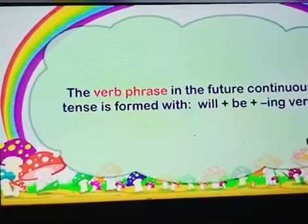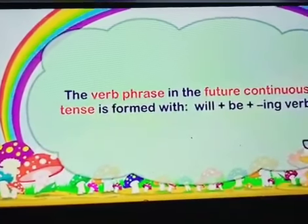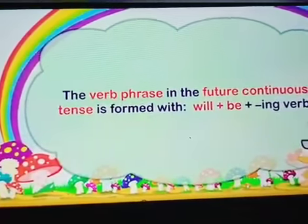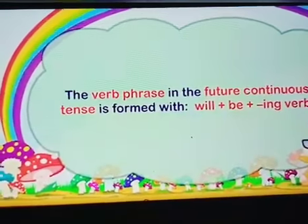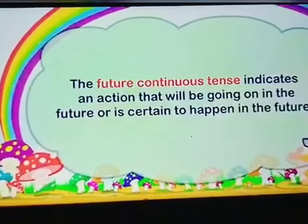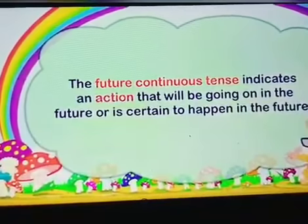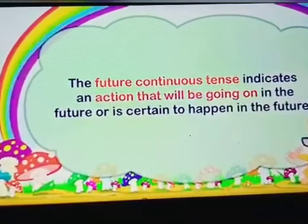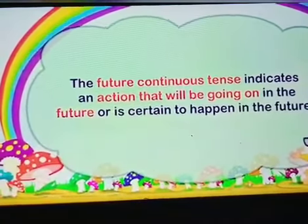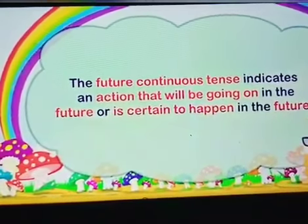Now moving on to the future continuous tense. It is formed with will plus be plus the ing verb. The future continuous tense indicates an action that will be going on in the future or is certain to happen in the future.